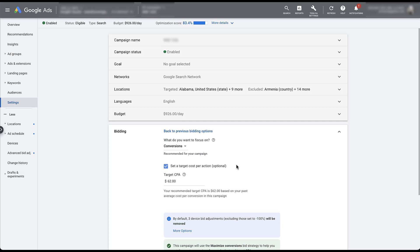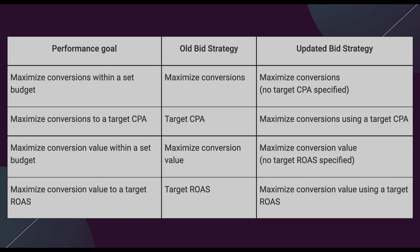For the last portion of this video, I want to give a quick recap on how these are being reorganized and revisit a couple of best practices around Target CPA and Target ROAS bidding. Here's a table from Google that outlines the different performance goals, the old bidding strategy, and the updated bidding strategy. If you're still trying to maximize conversions within a set budget, they suggest Maximize Conversions with no Target CPA. But if you do want to use a Target CPA, originally you would use Target CPA, and now you're going to use Maximize Conversions with a Target CPA restriction in place.